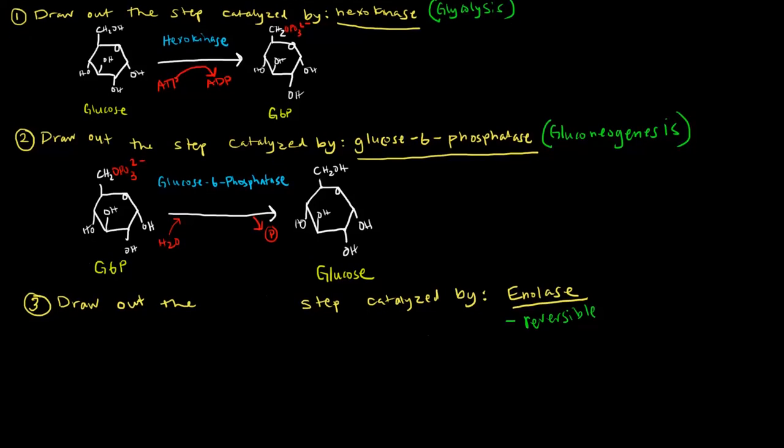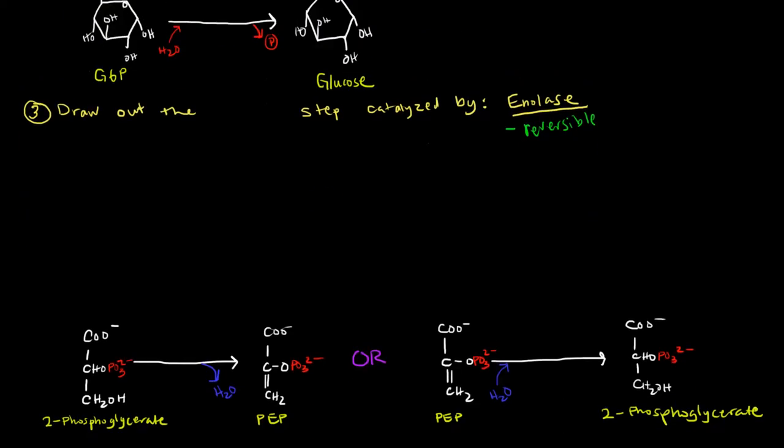I don't know what they're asking for. Are they asking for the reaction in which we go from 2-phosphoglycerate to phosphoenolpyruvate, or from phosphoenolpyruvate to 2-phosphoglycerate? There's ambiguity. If you're told to just draw out the step catalyzed by enolase, that's not enough information. You need to know whether you're being asked for the glycolytic or gluconeogenic step.